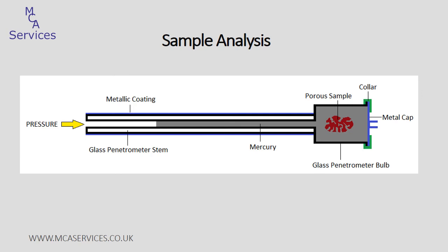The volume of mercury held in the stem is essentially a reservoir, which is used for intrusion into pores within the sample. As the applied pressure is increased to a point where mercury becomes intruded into pores, mercury will move along the stem, and it's this movement of mercury along the stem that is measured by changes in electrical capacitance. To intrude into pores of 0.003 microns — which is also 3 nanometres, the smallest pores measured by this instrument — a pressure of 60,000 PSI must be generated and applied, and that's just over 4,000 atmospheres.